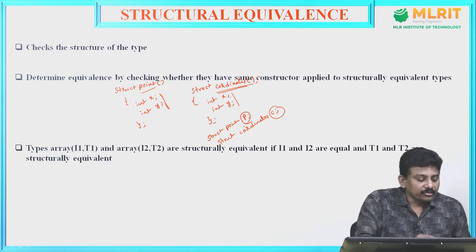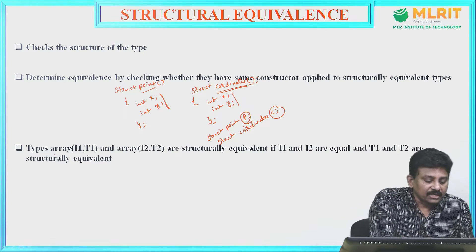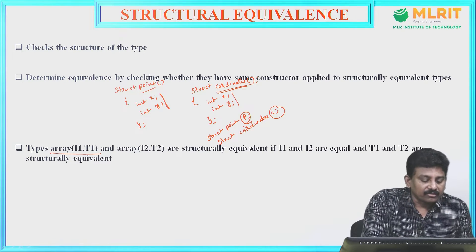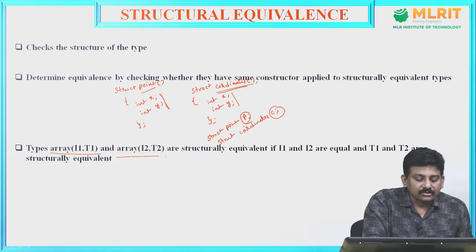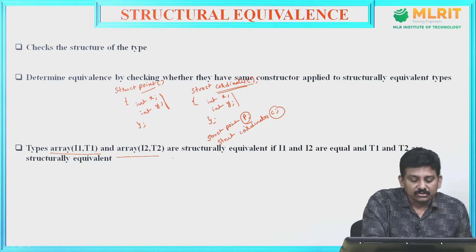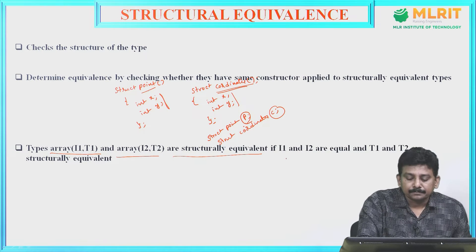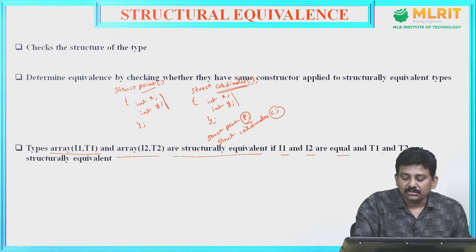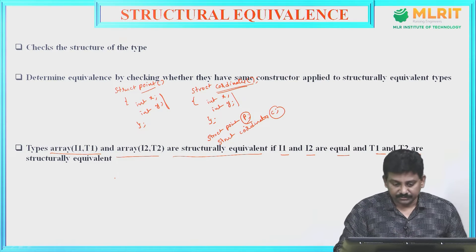Another example: array(i1, t1) and array(i2, t2) are structurally equivalent if i1 equals i2 and t1 and t2 are structurally equivalent.